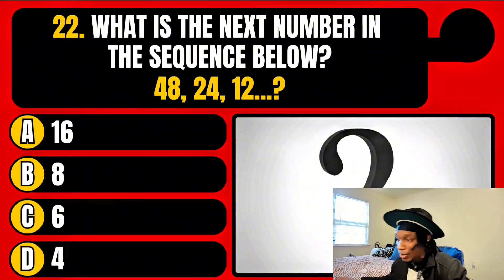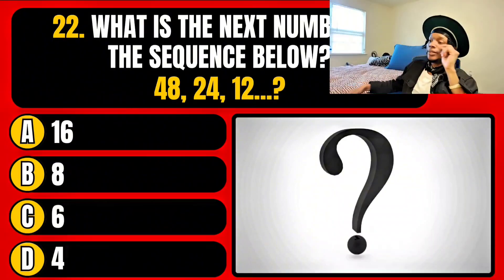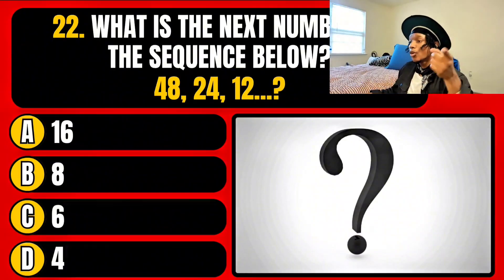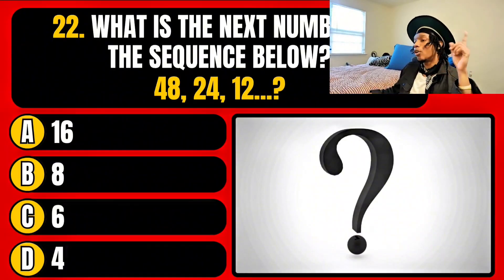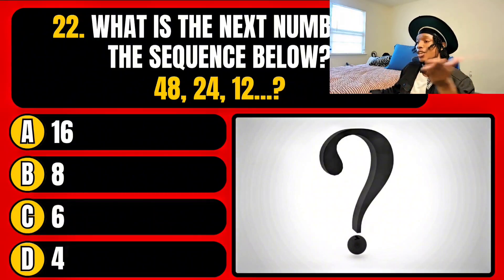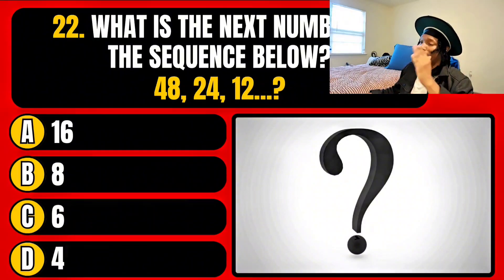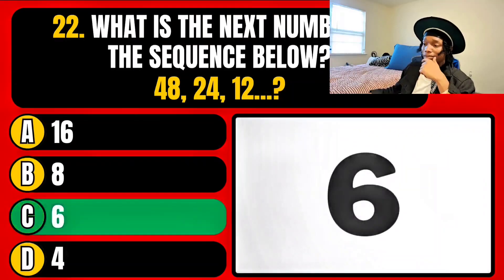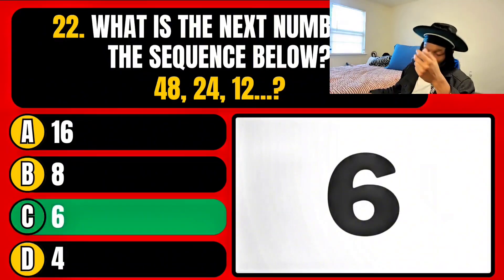What is the next number in the sequence below? 48, 24 — we are just dividing by halves. So therefore it is obviously six. Right off the bat, I know my divisions, because we are dividing. The correct answer is option C.